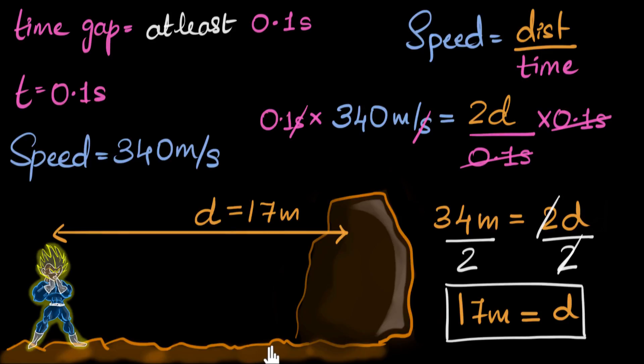And so what did we learn in the video? Well, we learned how to calculate the minimum distance to hear an echo. To do that, we need to remember one thing, that the time gap between the original sound and the reflected sound must be at least 0.1 second. Then all we had to do is use the formula speed equals distance by time. And with that, we could calculate the value of that minimum distance.